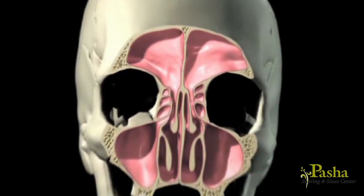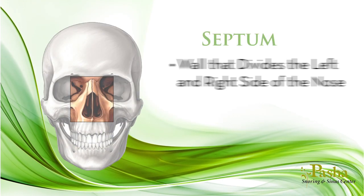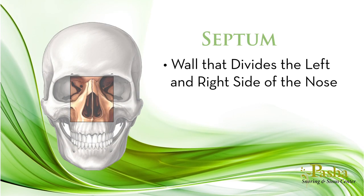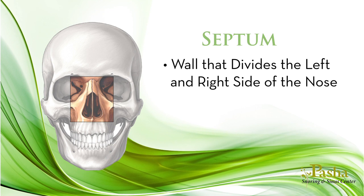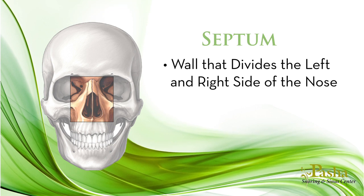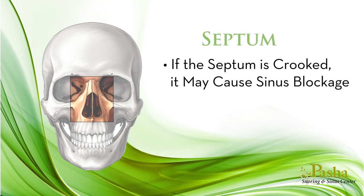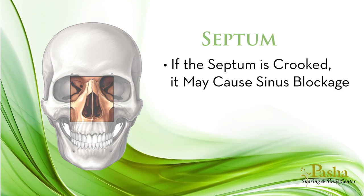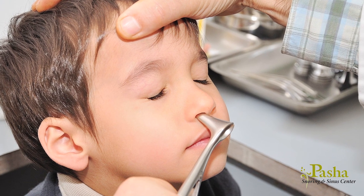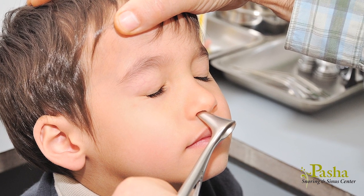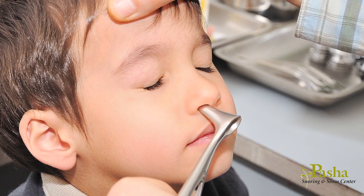The wall that divides the left and right side of your nose is called the nasal septum. This wall is made up of both bone and cartilage. For some, the septum may be crooked or deviated. This may have occurred from trauma, perhaps as a child, or you may have been born with a deviated septum.